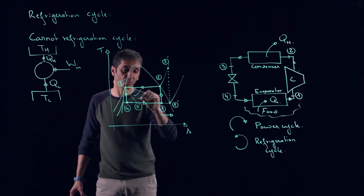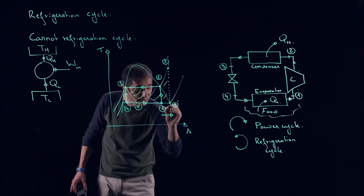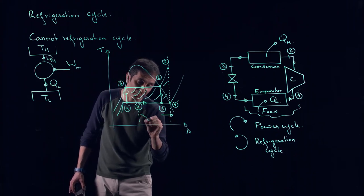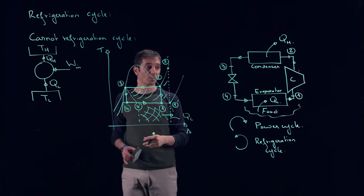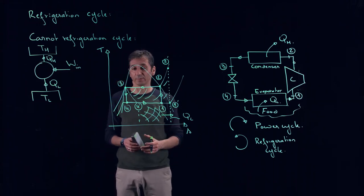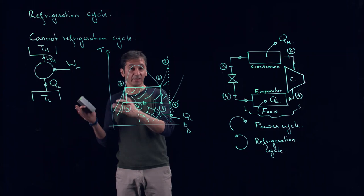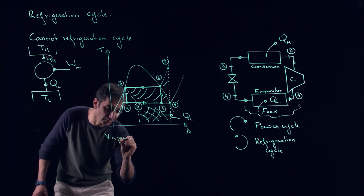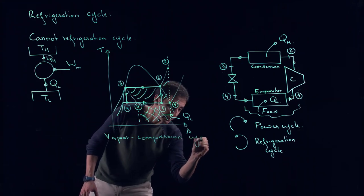And this is now basically our cycle. All this area is the work provided by the compressor and this area between one prime and four prime is QL, how much heat you are extracting from your cabinet or from the volume that you would like to cool down. So here we went from a Carnot refrigeration cycle which is ideal and not practical to a vapor compression cycle. This is ideal vapor compression cycle.